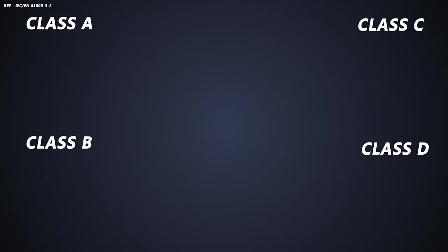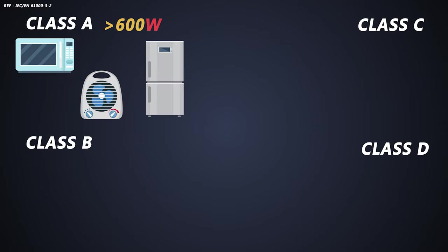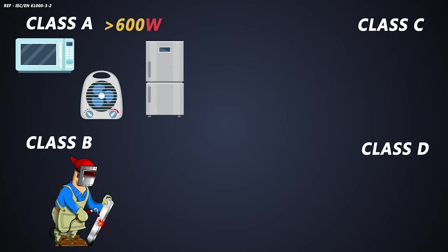Here all the household equipment which consume power more than 600 watts like audio equipment, cooking appliances, coolers, etc. are categorized. All the portable tools which are not professional like arc welding tool come into this category.